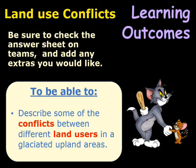So that's our lesson for today. Be sure to check your answer sheet on Teams and add any extras — try and have at least three for each heading. This will help us next week as we go on to look at the solutions to these conflicts. You should now be able to describe some of the conflicts between different land users in a glaciated upland area. In the next lesson we're going to look at some of the management strategies to reduce these conflicts. Goodbye!